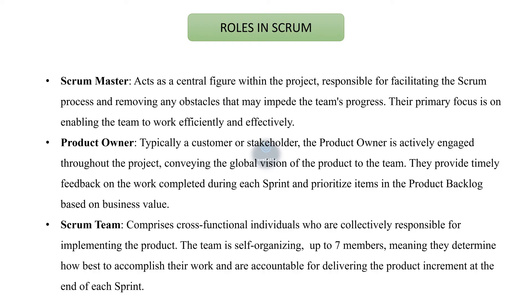The third role is the Scrum Team, which comprises cross-functional individuals who are collectively responsible for implementing the product. The team is self-organizing, with up to seven members, meaning they determine how best to accomplish their work and are accountable for delivering the product increment at the end of the sprint.